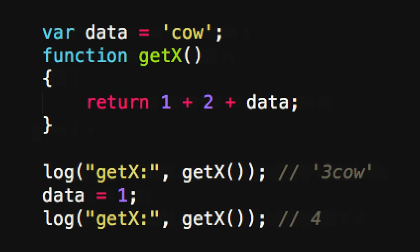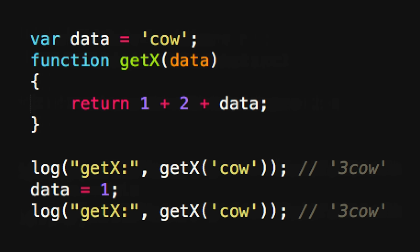It's affected by things outside or to the side of the function. In this case we have var data equals cow. When we call it we get a string of 'three cow', but then later we set the data to a number one and then we get a four. JavaScript either concatenates it if it's a string or does arithmetic and adds it. So you call the same function and get different results — you have to know about the things aside of it. One way to fix that and make it pure is to parameterize. If we pass in data, we're always going to get the same result back. If we pass in a string, we get a string. If we pass in a number, we get a number. So it's a pure function — it's predictable. Whatever we pass in from that parameter, always going to get the same result regardless of what happens outside of it.